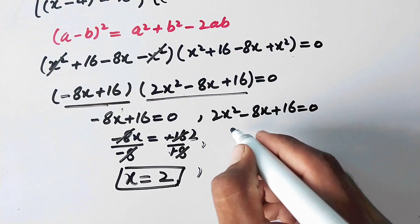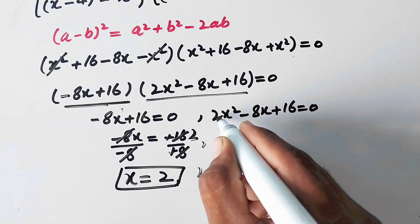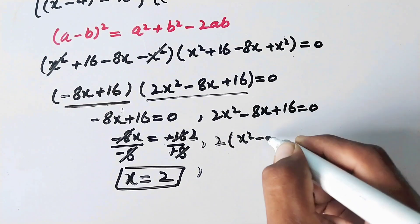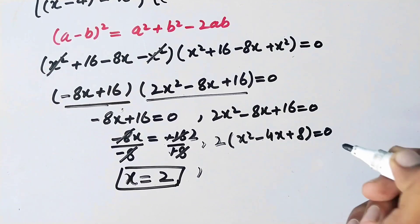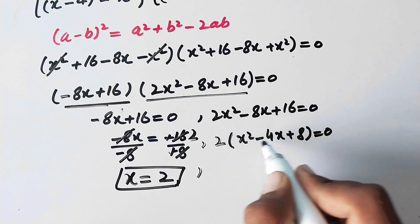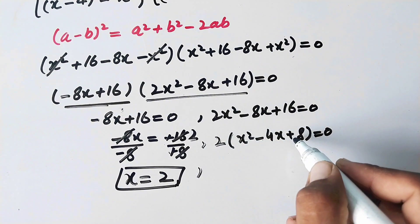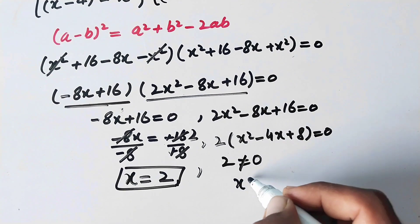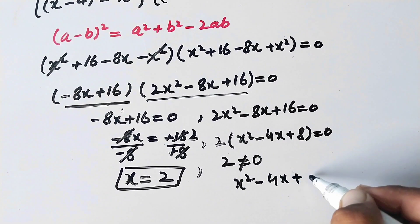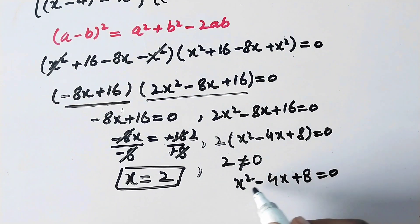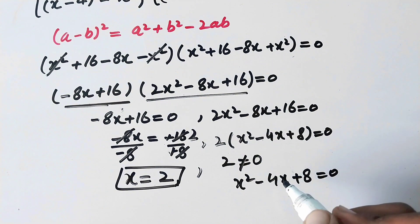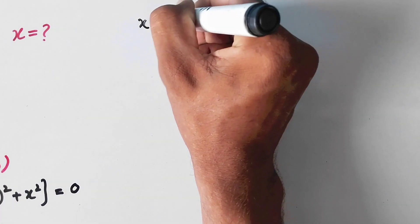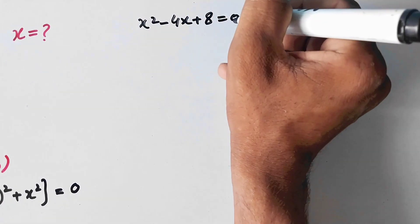Now on this side we will further simplify by taking 2 common from the whole equation. We are left with x^2 - 4x + 8 = 0. Since this is a product of 2 and this equation equal to 0, and 2 is not equal to 0, we can write x^2 - 4x + 8 = 0. Here we have a quadratic equation, so we will solve it using the quadratic formula.